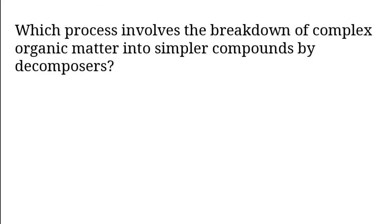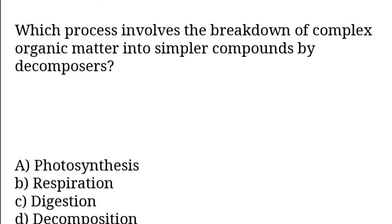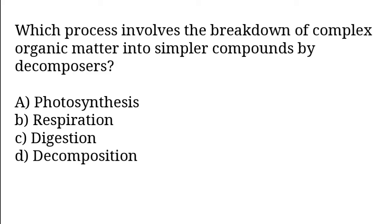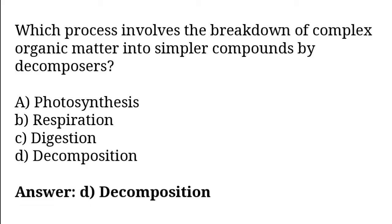Which process involves the breakdown of complex organic matter into simpler compounds by decomposers? Options: Photosynthesis, respiration, digestion, decomposition. So the correct answer is option D. Decomposition is the process involving the breakdown of complex organic matter into simpler compounds by decomposers.